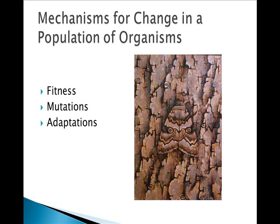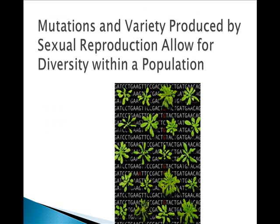Animals with greater fitness survive in an environment to live and reproduce. Random changes or mutations can lead to greater or lesser fitness — mutations are the single thing that allows change in a species over time. Adaptations allow an organism to survive better in their environment; you can see here a very well camouflaged moth. Mutations and variety are what allow diversity within a population, and you can see this in Arabidopsis, a type of mustard, which shows variability in plants from different geographic regions — they're all the same species but they all look different.